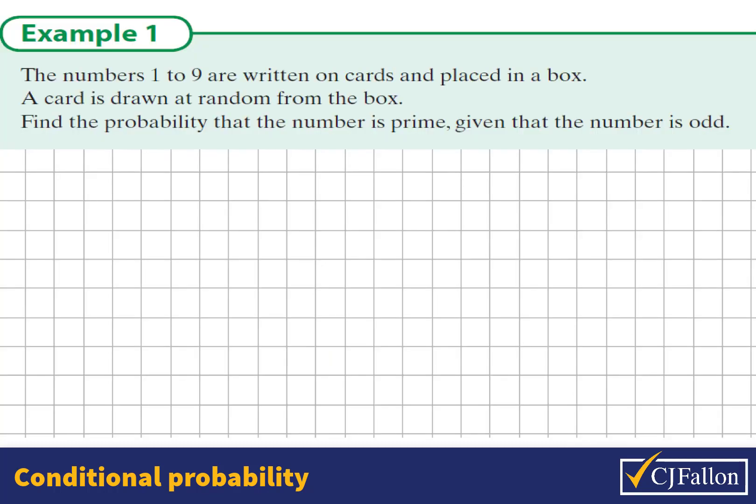Conditional probability, example 1. The numbers 1 to 9 are written on cards and placed in a box. A card is drawn at random from the box. Find the probability that the number is prime given that the number is odd.